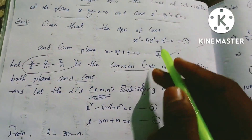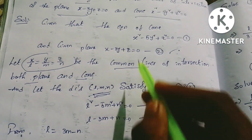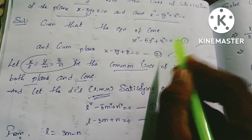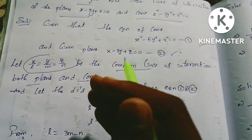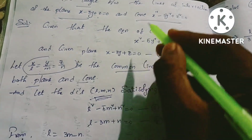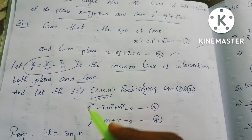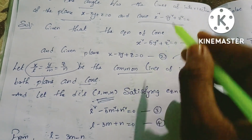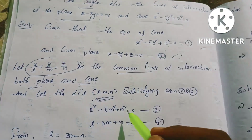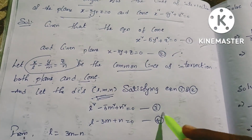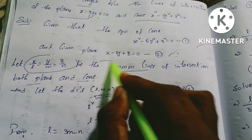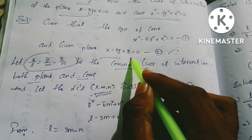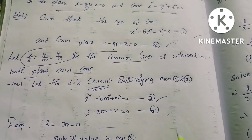The equations are labeled 1 and 2. We define the direction ratios on the plane equation. The cone equation gives: x²L² - 5y²M² + z²N² = 0 (equation 3). And the plane equation gives: L - 3M + N = 0 (equation 4).